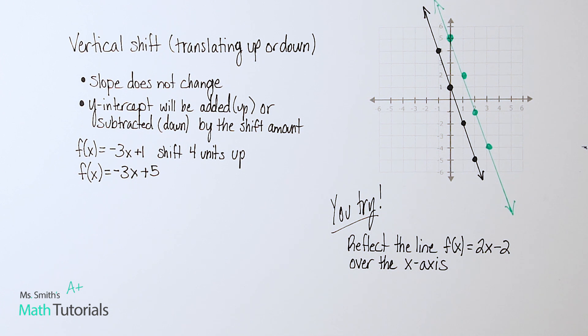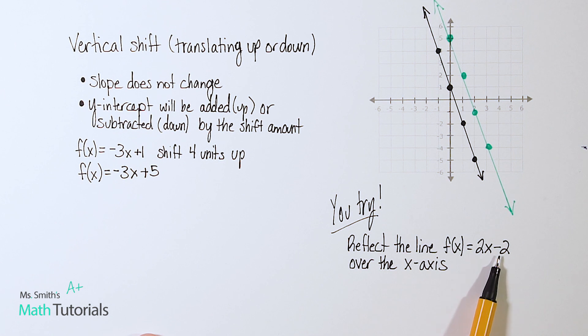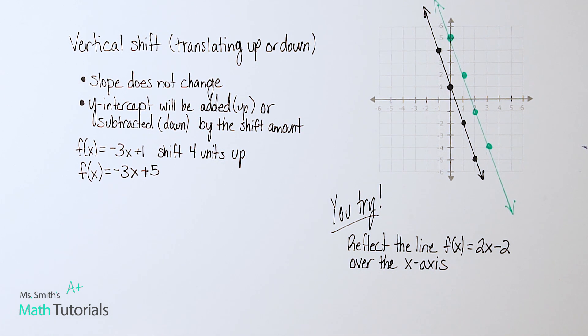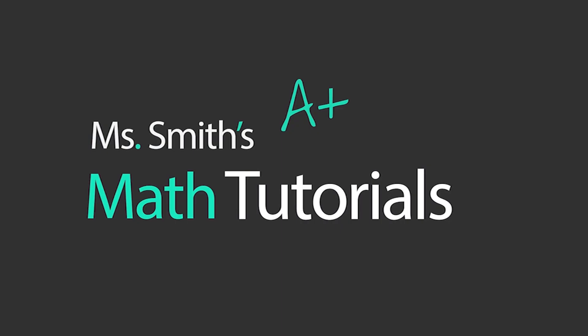I want you guys to try now. Reflect this line f of x equals 2x minus 2 over the x-axis. You may want to go back to that page and really review how do we reflect over an x-axis. I will post the answers in the video description below. This has been Miss Smith's Math Tutorials.